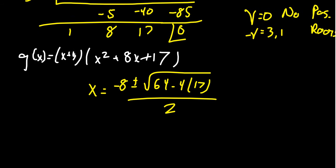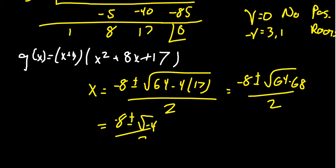And so let's see, 4 times 17, that's 68. So we get negative 8 plus or minus the square root of 64 minus 68 all over 2. That gives the radicand as negative 4, which then the square root of negative 4 is going to be 2i. Negative 8 plus or minus 2i over 2. Factor out a 2 from the numerator, we get negative 4 plus or minus i over 2. This 2 cancels.